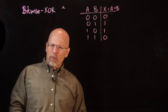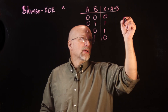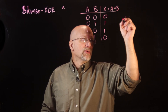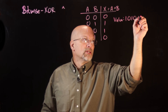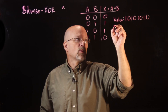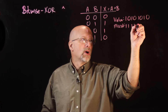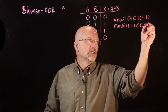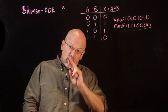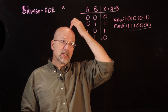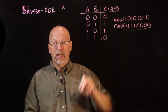Now, what does a Bitwise operation look like with the Exclusive OR? We're going to use the same value. Another way of looking at the 2-input Exclusive OR is to say that if the bits are the same, the output's a 0. If the bits are different, the output's a 1.